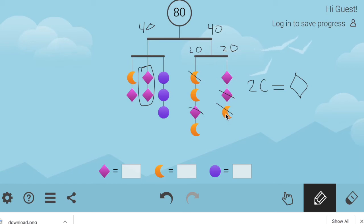Now, I want the total to be 20. So if I replace each of these diamonds with two moons, I will have five moons equal to 20, and that means a moon must equal four.